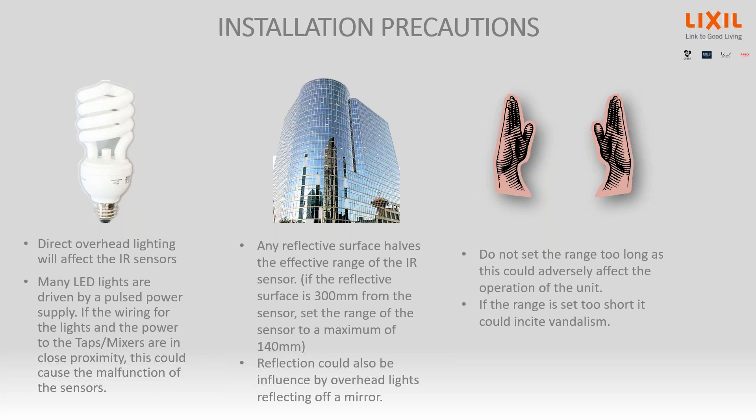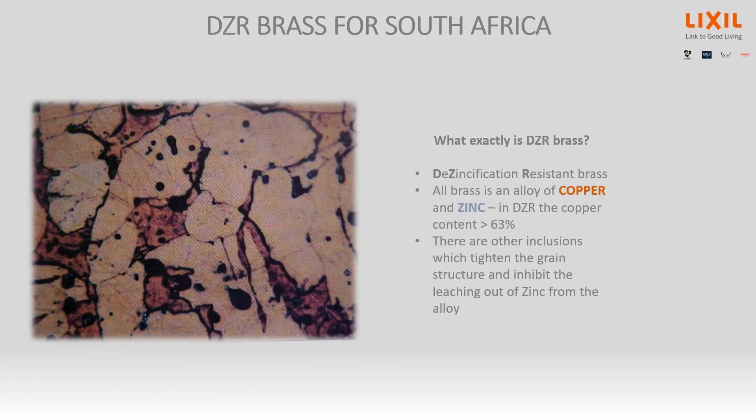Overhead lights can sometimes reflect back onto a mirror and send a false message into the infrared eye, but invariably whatever the issues are they can be sorted out on site. Also, don't set the range too long — if people have to reach far under it, they start to fiddle and bang. Try to set the range appropriately; the default setting is usually right. If you're doing an ablution block, try each unit and make sure it works the way you'd like.